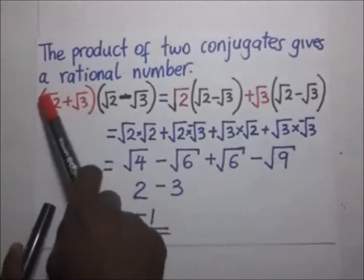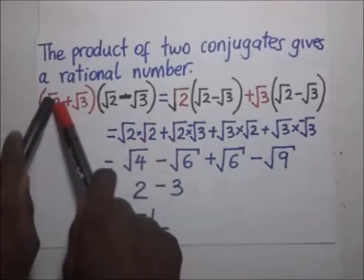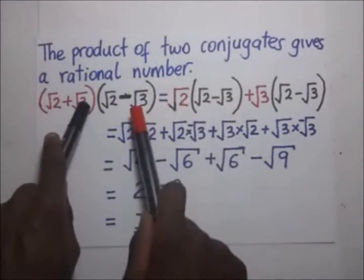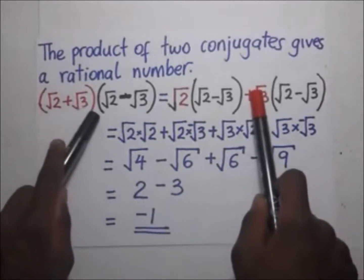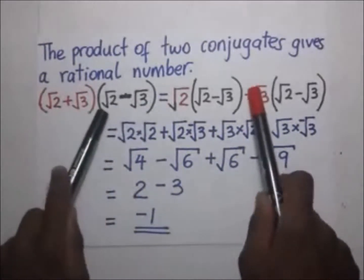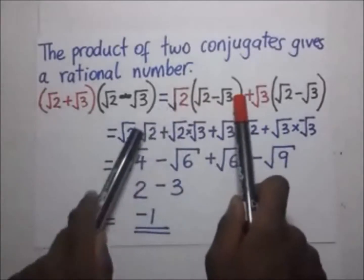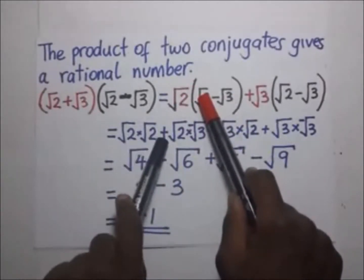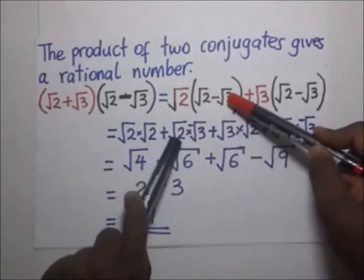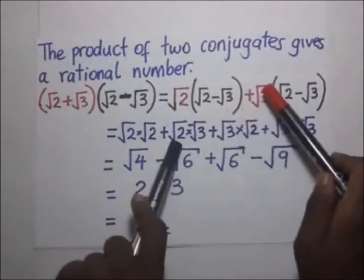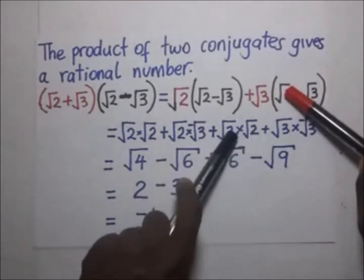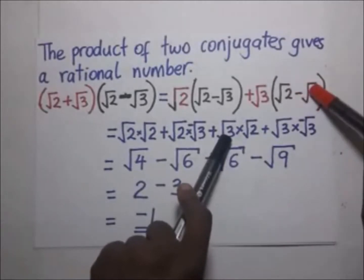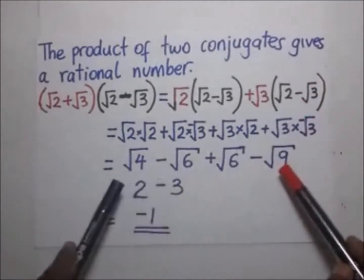So we are going to multiply this bracket by that bracket. It is going to be root of two times the whole second bracket, then plus three times the whole second bracket. Opening the brackets: root of two times root of two, then plus root of two times negative three, then plus root of three times root of two, then root of three times negative root of three.